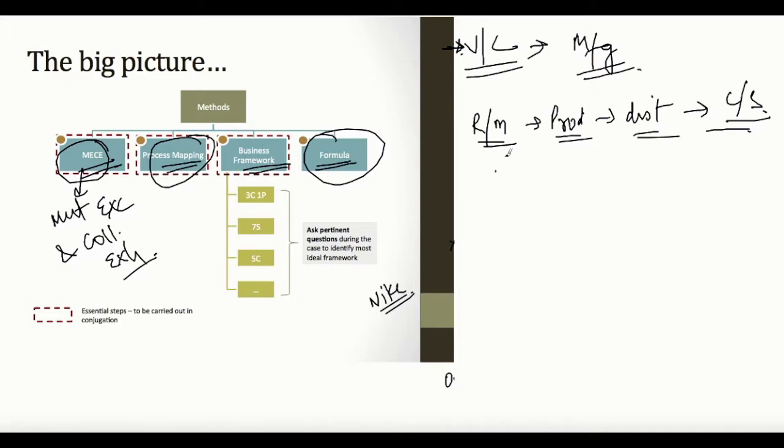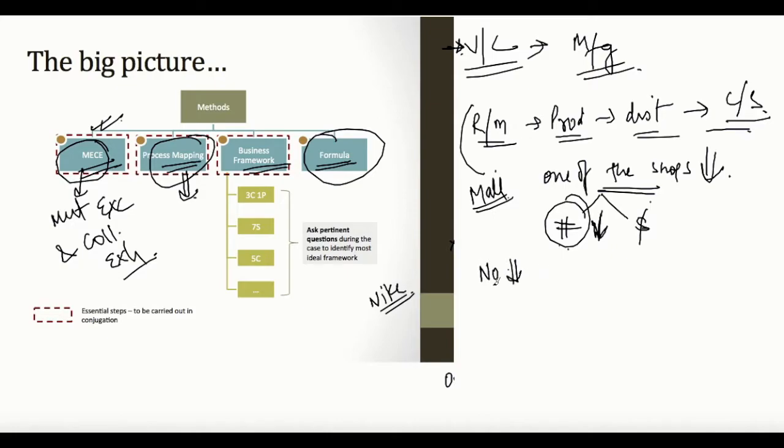I'll take a small example. Let's say this was a case about a shopping mall, and one of the shops was facing decline in profit. So in this case, we will use process mapping and MECE both. First of all, I figured volume times price. Volumes were going down. Now to figure out the drop in volume, we asked a lot of questions. We finally figured that not enough people were entering our shop. The number of people entering our shop had gone down.